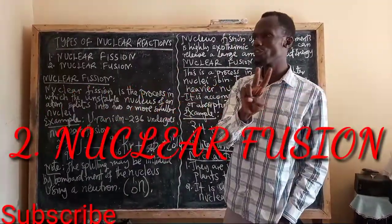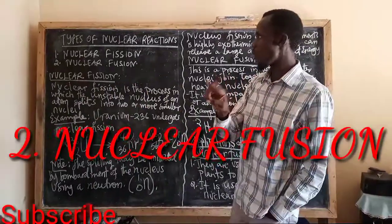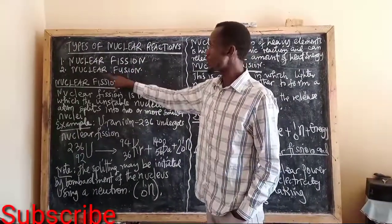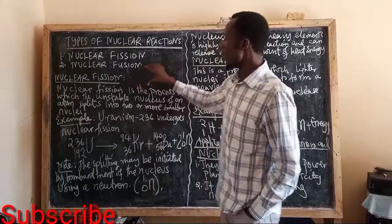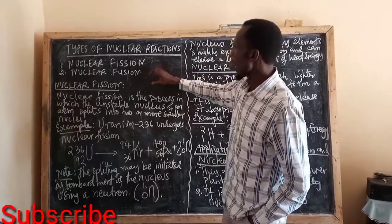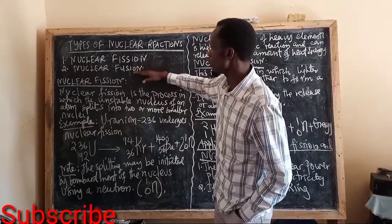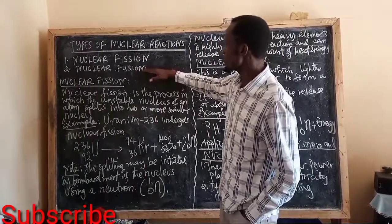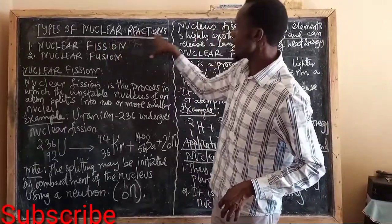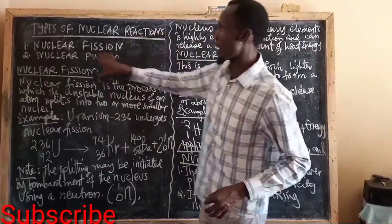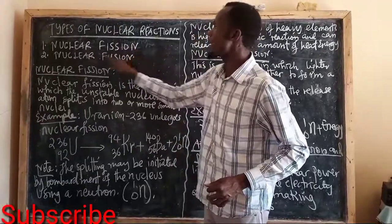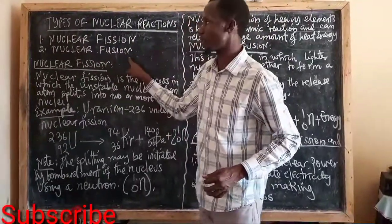We are having two types of nuclear reactions. One is nuclear fission, and the second is nuclear fusion. We have to know how to differentiate them, as there is a difference between these two.